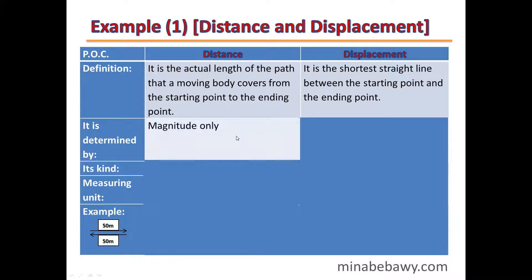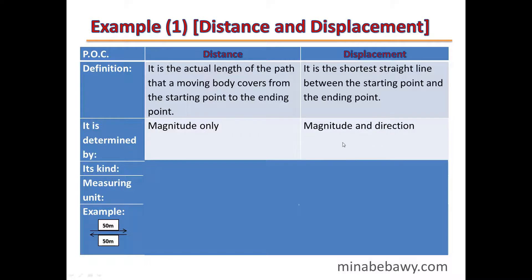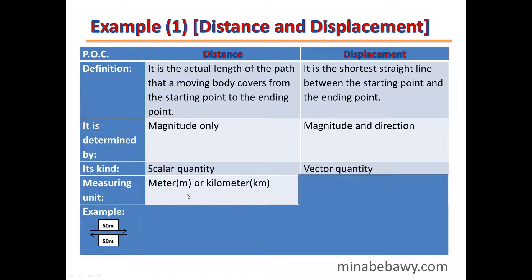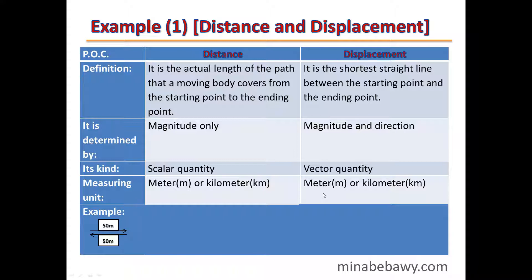To determine distance, we have to know its magnitude only. But to determine displacement, we have to know its magnitude and its direction. Distance is a scalar quantity, while displacement is a vector quantity. Distance is measured in meter or kilometer, and displacement has the same units: meter and kilometer.